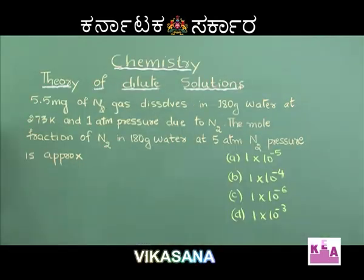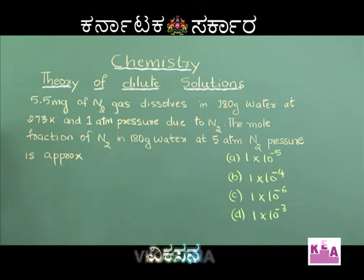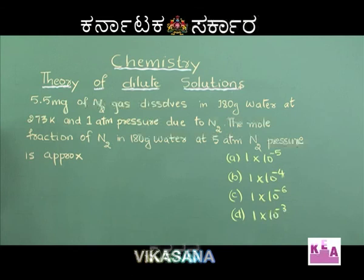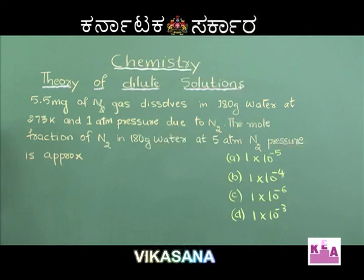Let us solve a question related to the solubility of nitrogen. 5.5 milligram of nitrogen gas dissolves in 180 gram of water at 273 Kelvin and at 1 atmosphere pressure due to nitrogen. The mole fraction of nitrogen in 180 gram of water at 5 atmosphere nitrogen pressure is approximately: option A 1×10⁻⁵, option B 1×10⁻⁴, option C 1×10⁻⁶, and option D 1×10⁻³.